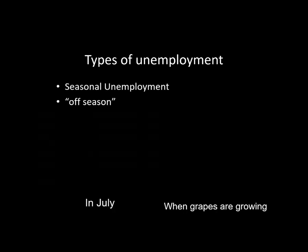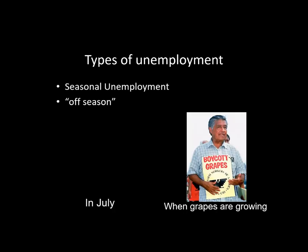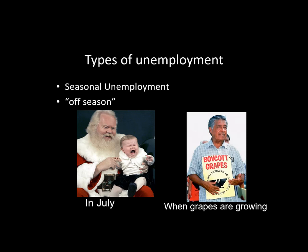Next is seasonal unemployment. Some jobs have an off season. For migrant workers, when the grapes are growing they're employed, but when the grapes are not growing they are unemployed — seasonally unemployed. Think about a teacher during the summer or a lifeguard during the winter. Those are examples of seasonal unemployment. These first two types really aren't that big a deal.